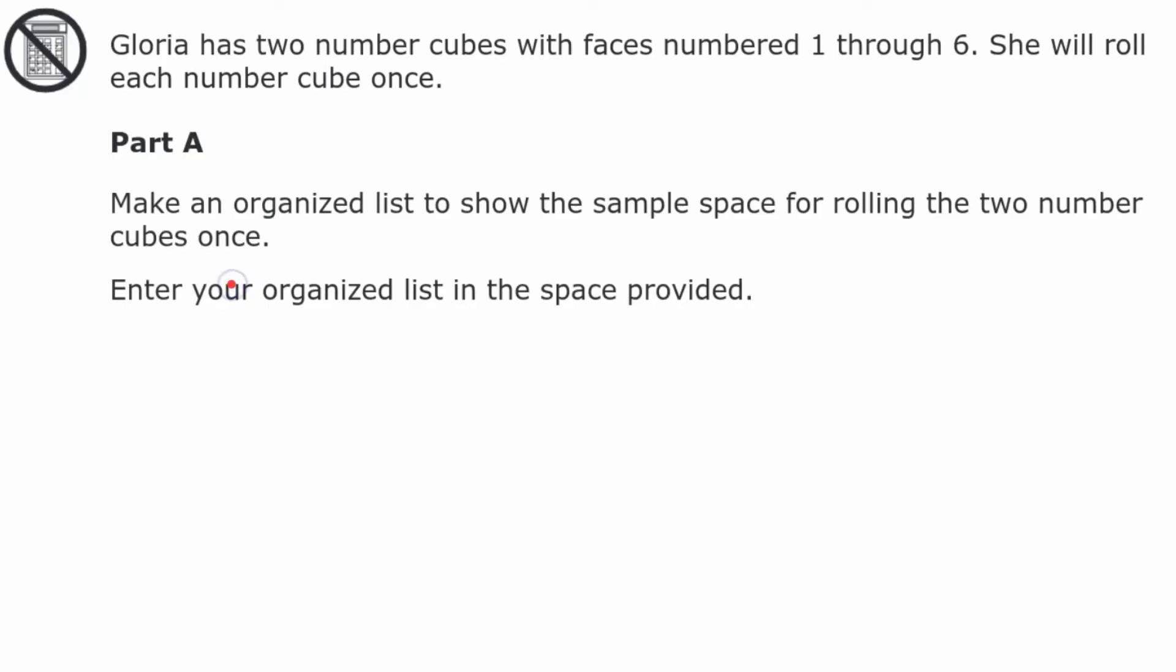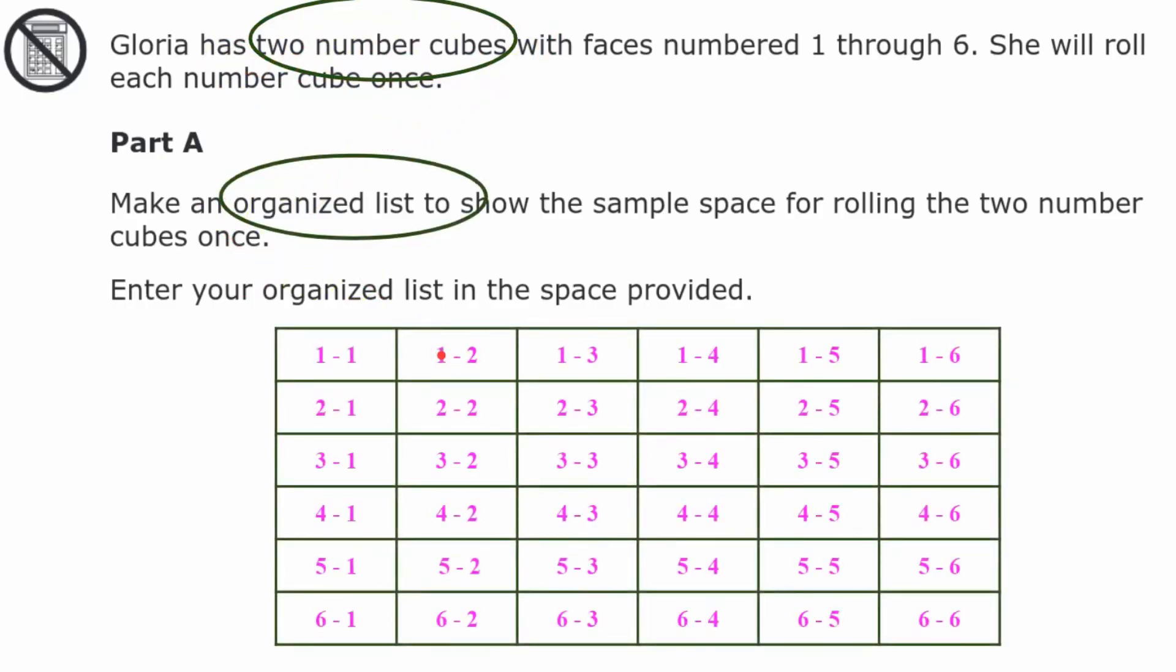Welcome back. So here is my organized list. Reminding you I have two number cubes and I'm going to make my organized list. Mine looks like a table. I know that if I roll a 1 on the first one, the second one could be a 1 or a 2 or a 3 or a 4 or a 5 or a 6 and I did this. Now if the first cube is a 2, that can also have each of the six numbers for the second, for a 3, a 4, a 5, and a 6. So this is my organized sample space right here.